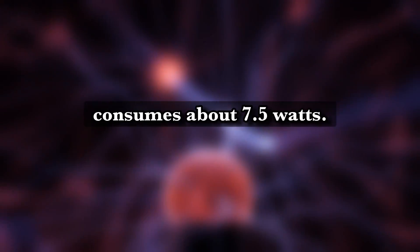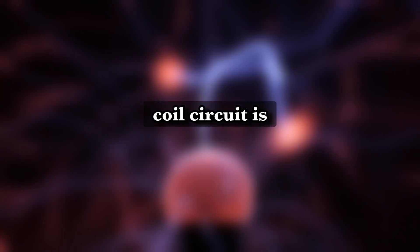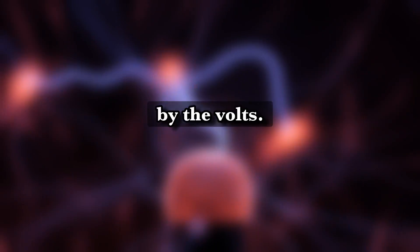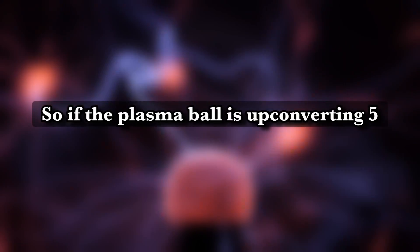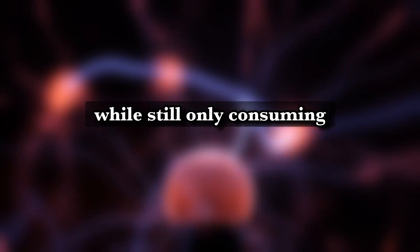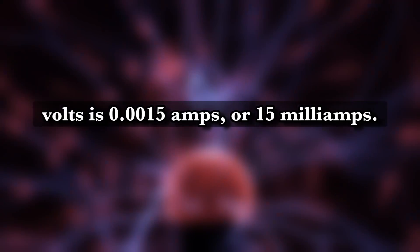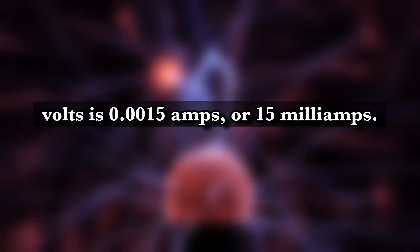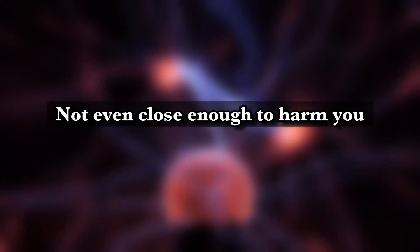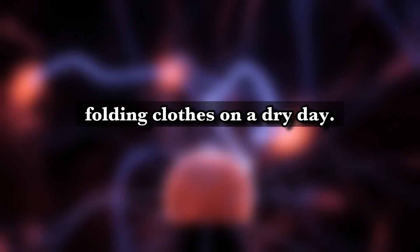Anyway, our plasma ball consumes about 7.5 watts. To figure out how many amps the Tesla coil circuit is producing, we'll divide the watts by the volts. So if the plasma ball is up converting 5 volts to 5,000 volts while still only consuming 7.5 watts, 7.5 watts divided by 5,000 volts is 0.0015 amps, or 15 milliamps. Not even close to enough to harm you beyond a weak zap of static electricity. In fact, you've probably felt worse folding clothes on a dry day.